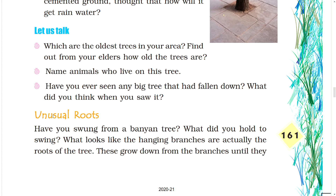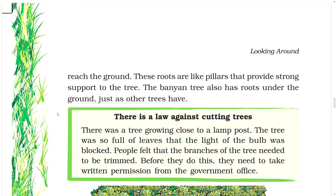Unusual roots. Have you swung from a banyan tree? What did you hold to swing? What look like hanging branches are actually the roots of the tree. These grow down from the branches until they reach the ground. These roots are like pillars that provide strong support to the tree. The banyan tree also has roots under the ground, just as other trees have.